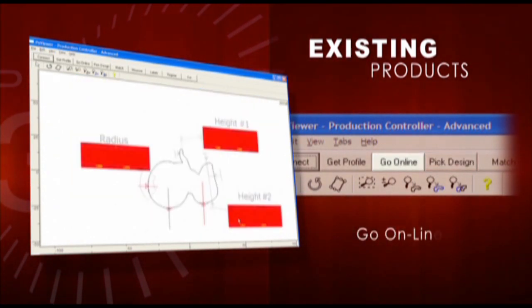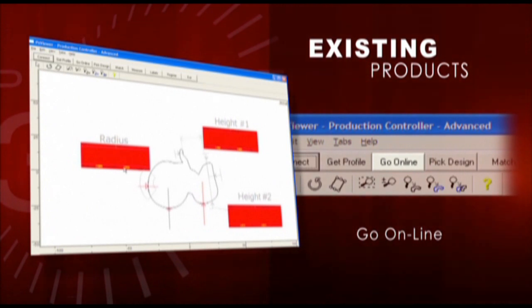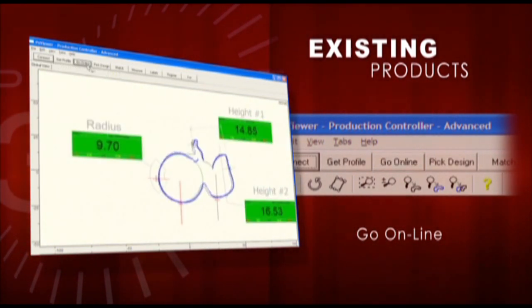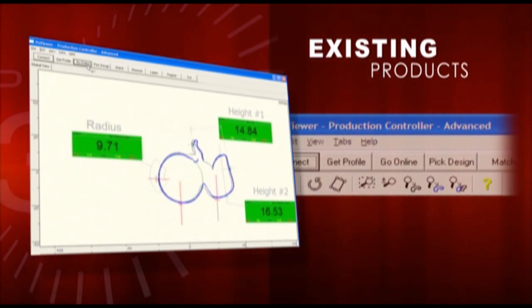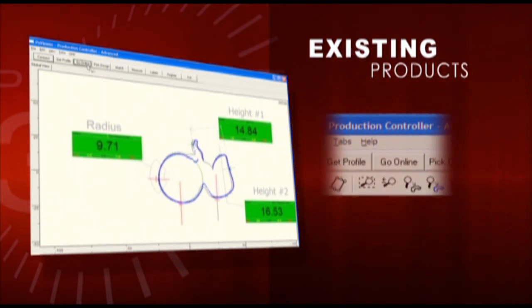Then he clicks the Go Online button and begins monitoring the profile and collecting data. The display immediately shows whether the product is within or outside of your defined tolerances.